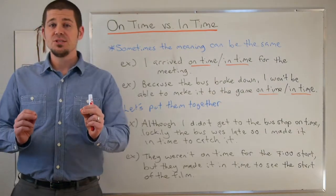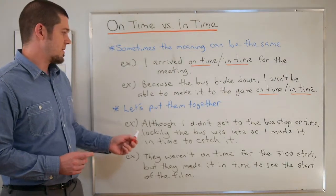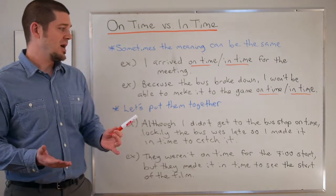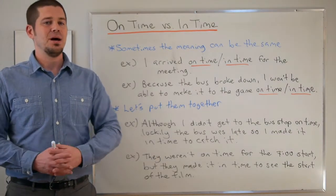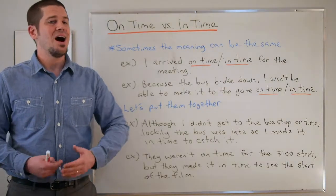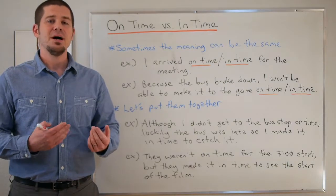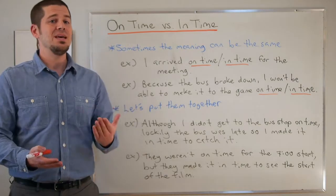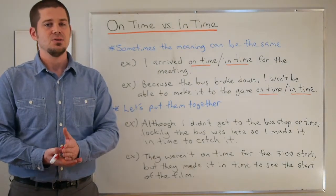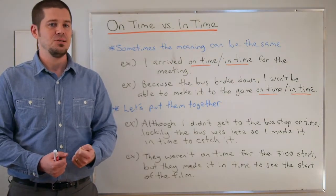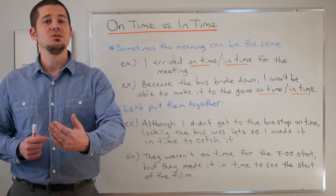Now let's put them together with examples to clarify the difference. 'Although I didn't get to the bus stop on time, luckily the bus was late so I made it in time to catch it.' The bus is scheduled to leave at 7:30. I arrive at 7:35 — so clearly I'm not on time. But luckily the bus doesn't arrive until 7:40. So I am in time to catch the bus, even though I was not on time. This highlights that with 'in time' we often follow it with an infinitive — 'in time to do something.'